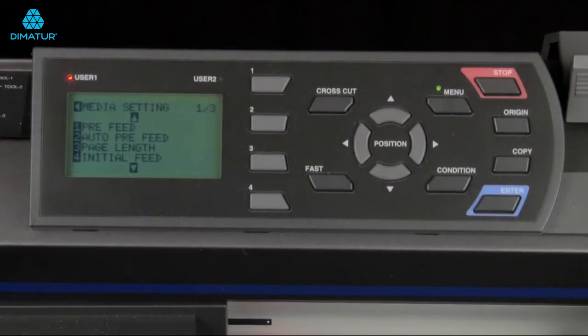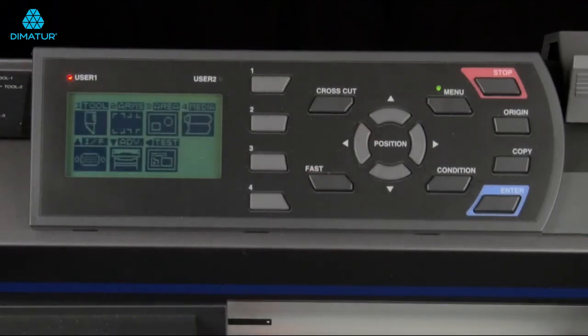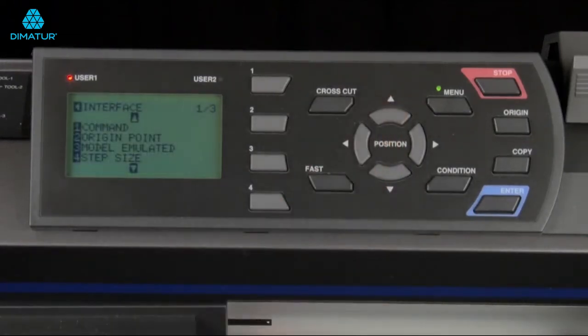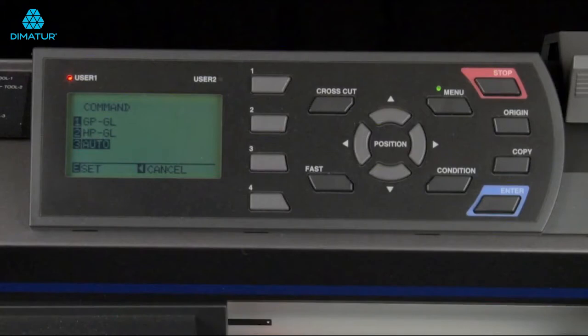Finally, we need to set the command language. So let's get back to the main menu once again by pressing the left arrow key once. Next, press the up arrow key for I/F or interface, and then press the one key for command. There are two command languages that the plotter accepts, GPGL or HPGL. Graphtec software such as the Graphtec Studio and Cutting Master 3 will always output in GPGL. Third-party software packages such as FlexiSign or SignLab will output in HPGL. Check your software manual for details. If you are still unsure, press the three key for auto or automatic.